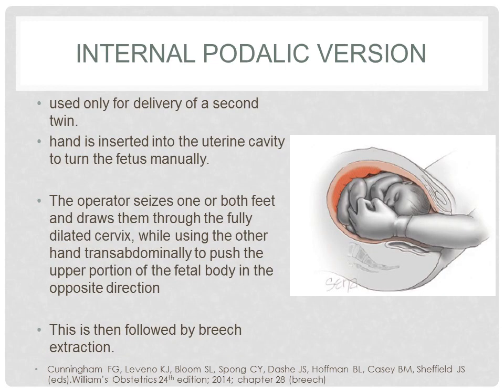For internal podalic version, this maneuver is used only for delivery of a second twin. With the membranes preferably still intact, a hand is inserted into the uterine cavity to turn the fetus manually. The operator seizes one or both feet and draws them through the fully dilated cervix, while using the other hand transabdominally to push the upper portion of the fetal body in the opposite direction. This is then followed by breech extraction.